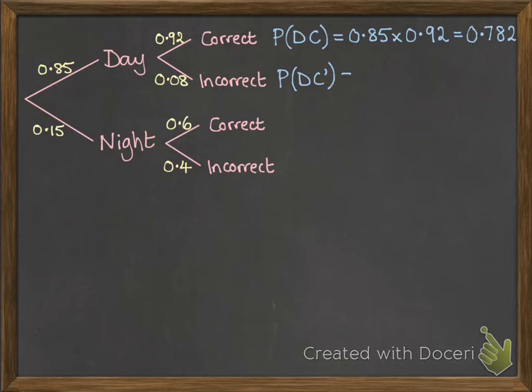Then we've got this next one is the probability of going in the day and being incorrect. Now notice that little dash on the C there. That is the probability notation for the opposite of the thing. So C represents correct. C dash is the opposite of correct. So in this case it would be incorrect.